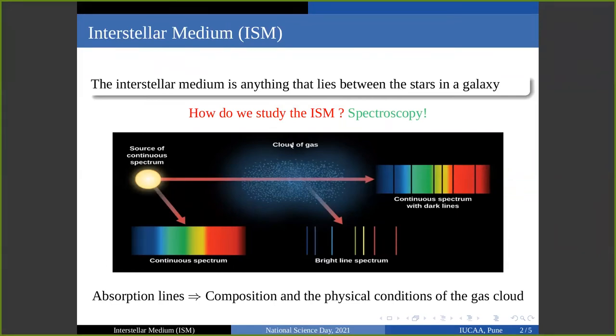But how do we study the interstellar medium? For that, we use an extremely powerful technique in observational astronomy known as spectroscopy. To give you a brief idea of how it works, consider the diagram shown here.